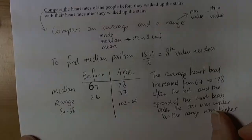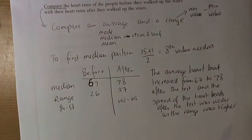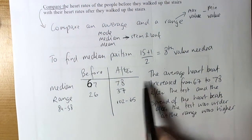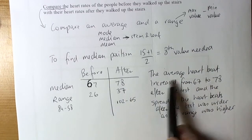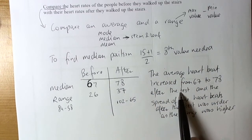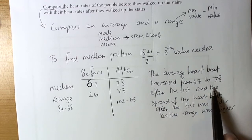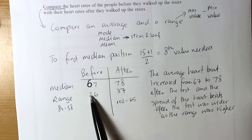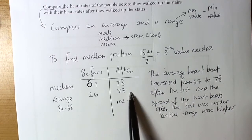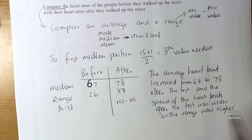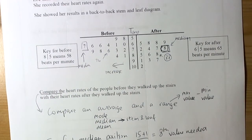Okay so we can say that because when we look at the data we can see that the median average has increased. So the average heartbeat increased from 67 to 78 after the test. And the spread of the heartbeats, well the range tells you about the spread, the distribution of the data. And the range after the heartbeats was 37, showing that the heartbeats were more spread out than at the beginning. So that's how we would interpret a back-to-back.